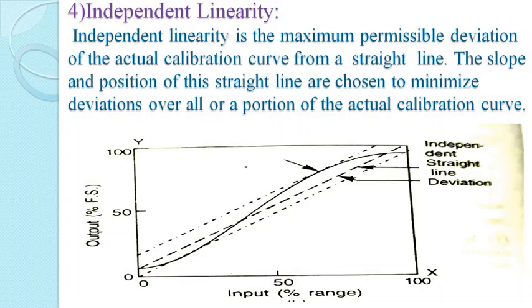The fourth type is independent linearity — the maximum permissible deviation of the actual calibration curve from a straight line, where the slope and position of the straight line are chosen to minimize deviation over all or a portion of the actual calibration curve. Here the calibration curve is not dependent on a straight line, so the deviation on both sides is different — one side is minimum and the other is maximum. The diagram shows how linearity is independent of the straight line deviation.